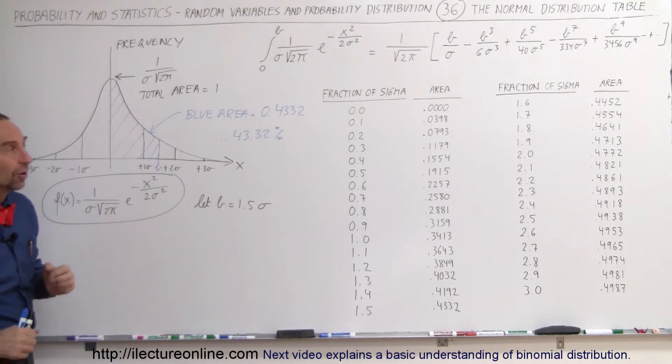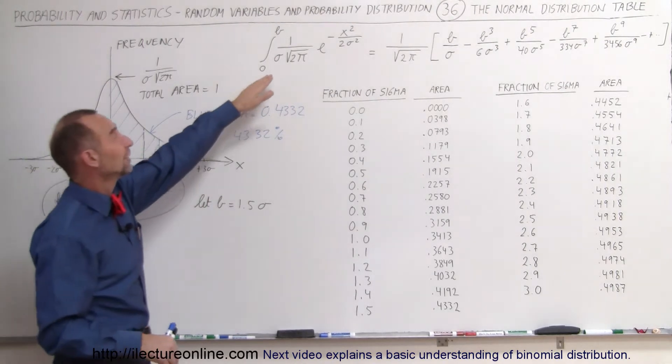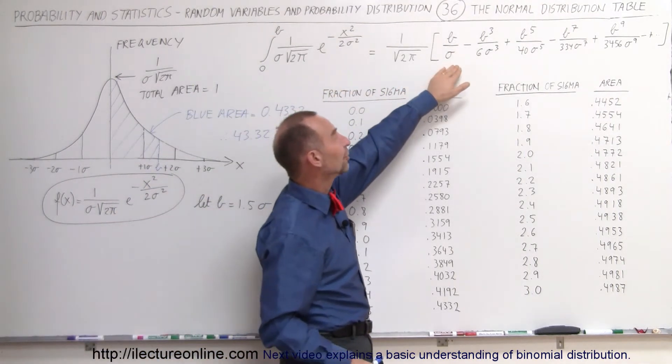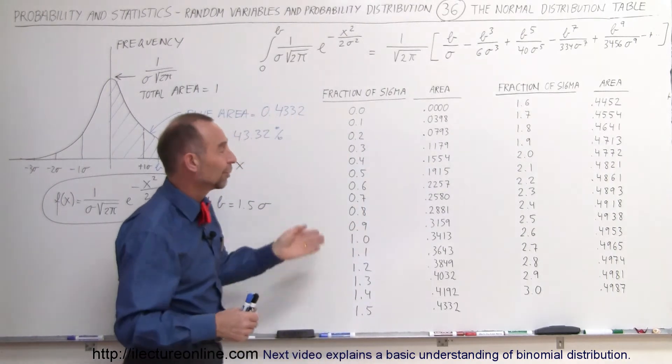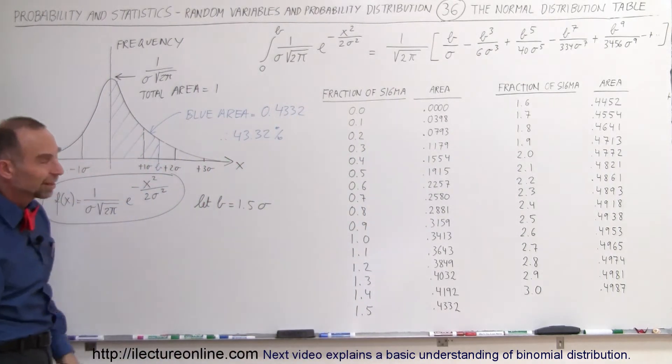We simply use a table of values. If you want to, we can go ahead and solve the integral, follow the error function for a particular value for b and sigma, and we can do that for each case. But of course using a table is a lot easier. Let's try a couple more.